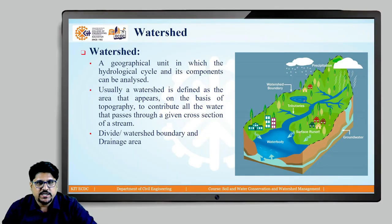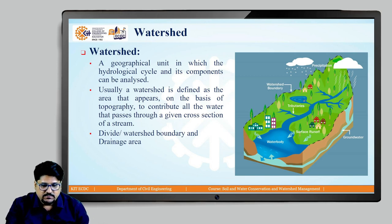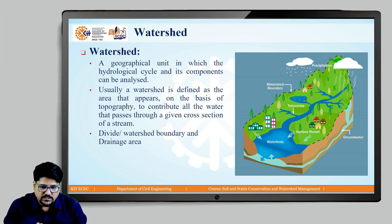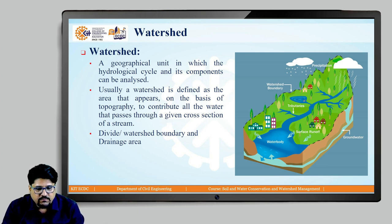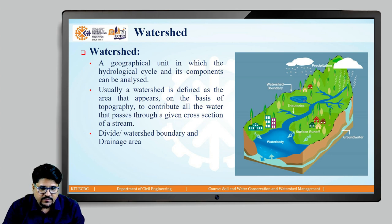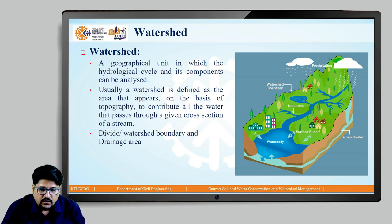To summarize, a watershed is basically a topographically delineated area that is drained by stream systems. It is generally represented by a figure having a ridge, different routes, and major streams. Whatever precipitation falls on this watershed area is transformed into runoff, which will finally join into a river. This river is considered as the outlet of this particular watershed.